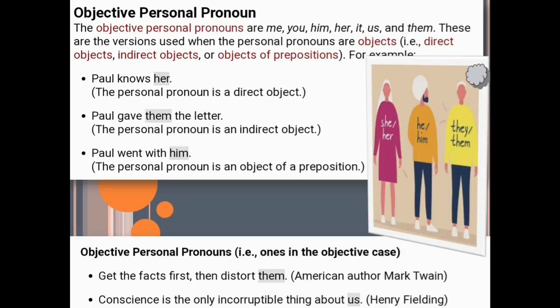Objective personal pronouns are those in an objective case in a sentence. Some examples from famous authors: get the facts first, then distort them — them is a direct objective personal pronoun, a saying by Mark Twain. Conscience is the only incorruptible thing about us — here about is a preposition and us is a personal pronoun used as an object of the preposition, a saying by Henry Fielding.